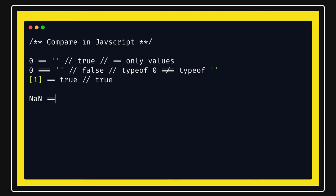Like NaN — not a number — if you do triple equals NaN, value and type both are the same, but it will still return false. It's strange when you first see it. Triple equals is checking type and value both, but NaN is an exceptional case. When you do typeof NaN, you can consider this an exceptional case.